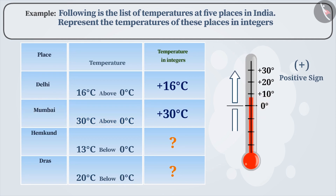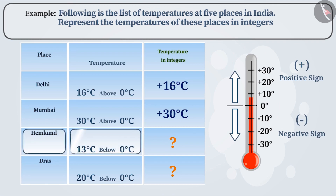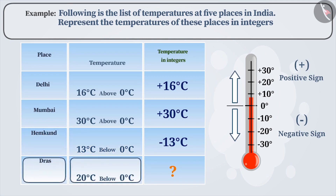If the temperature is below 0 degrees centigrade, then it is represented as a minus sign. The temperature of Hemkund is 13 degrees centigrade below 0. Therefore, it is represented as minus 13. Similarly, that of Dhras is 20 degrees centigrade below 0. Therefore, it is represented as minus 20 degrees centigrade.